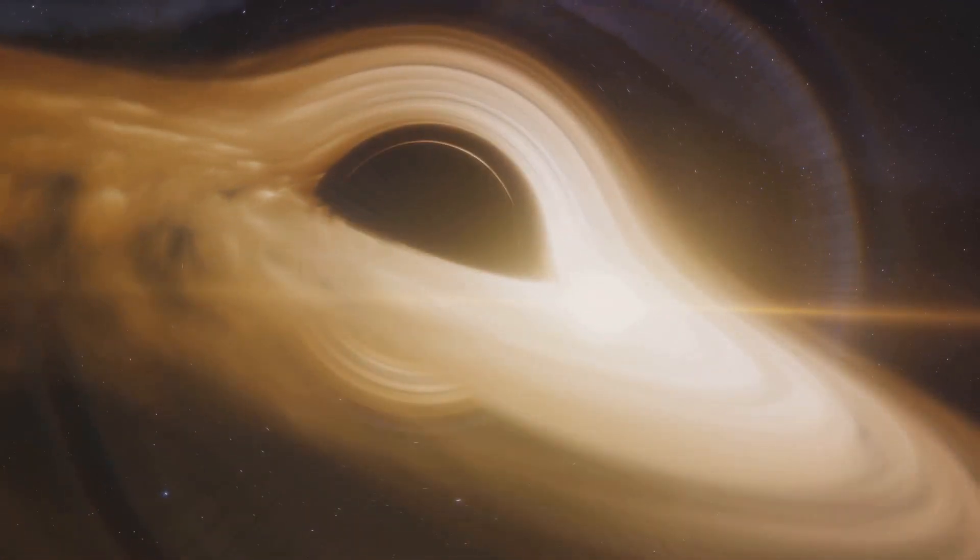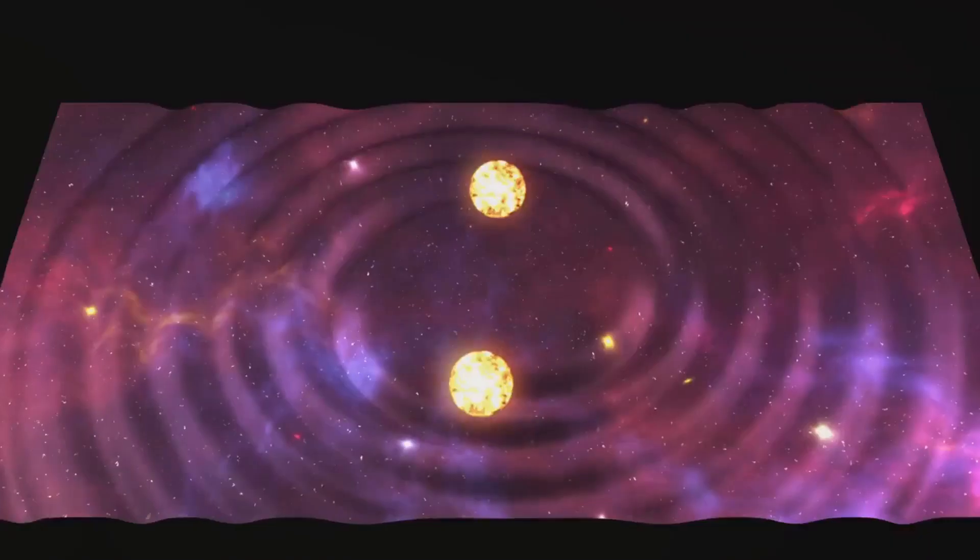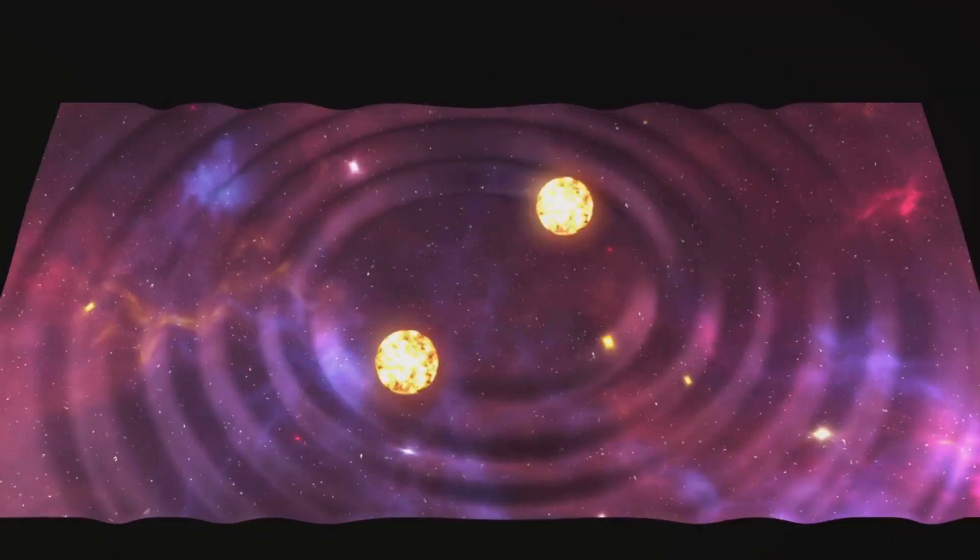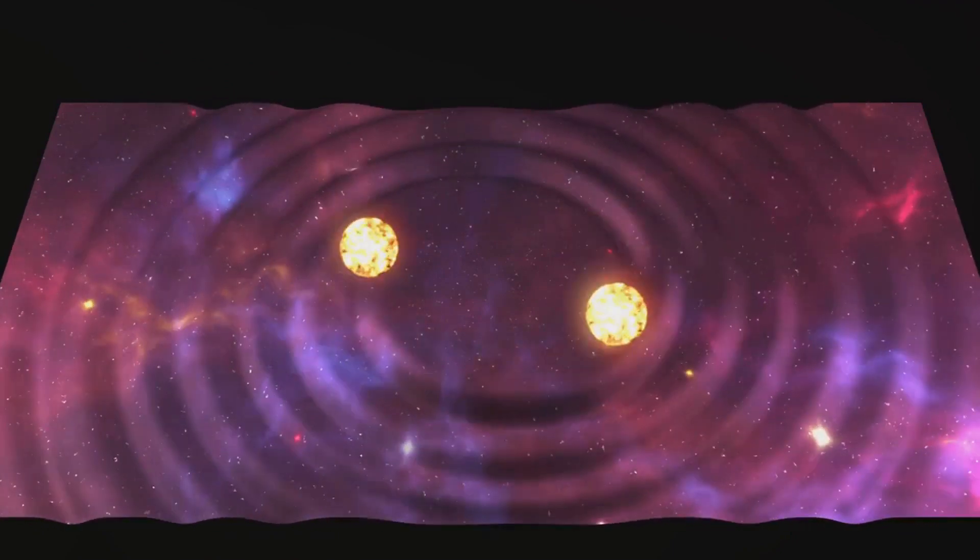In a similar way, when massive objects like black holes or neutron stars move or accelerate in space, they create ripples in the fabric of space-time. These ripples are what we call gravitational waves.